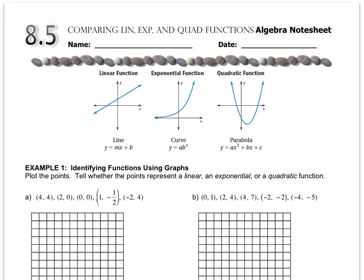This lesson has us comparing the three different types of graphs that we've learned about so far: linear, exponential, and quadratic. So what I'd like you to do in example one is plot the points, and then you have to tell whether it's linear, exponential, or quadratic.